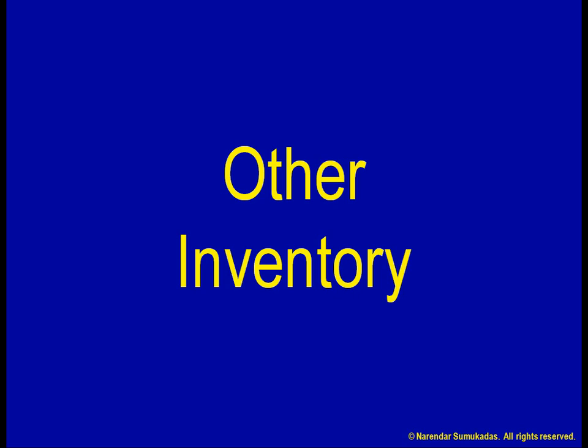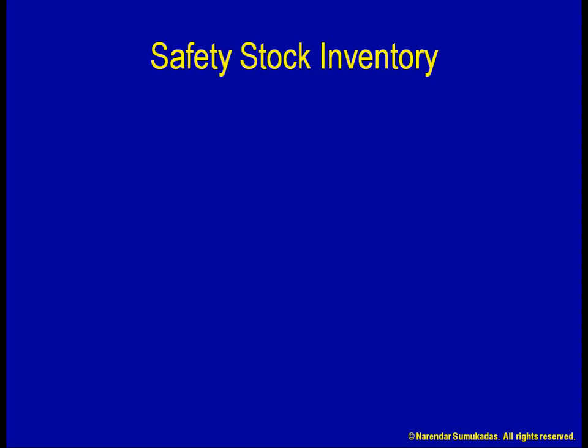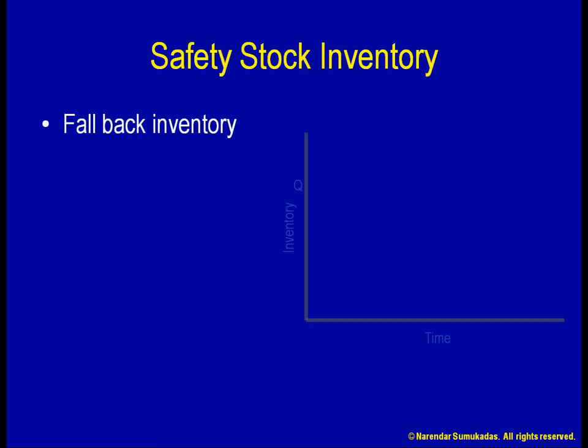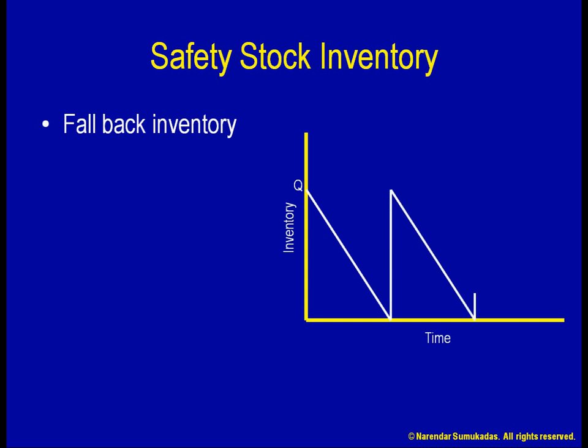In addition to cycle inventory, another form of inventory is safety stock inventory. Safety stock is essentially fallback inventory to tide us by in case something unexpected happens. For example, in the sawtooth inventory pattern, we assume that inventory is depleted at a constant rate and that replenishment happens exactly as we hit zero.